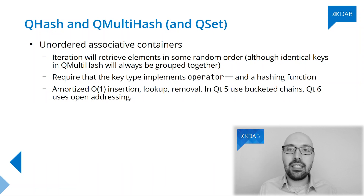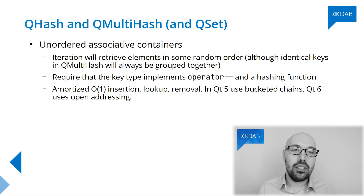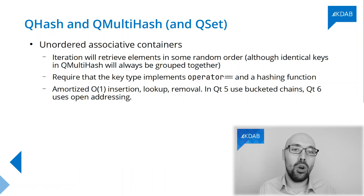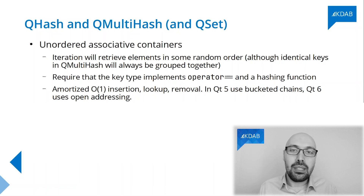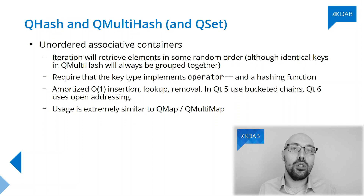Under the hood, this is done in a couple of different ways. In Qt 5 this is done using chains of buckets; in Qt 6 this is done using open addressing — but that's kind of an implementation detail, don't rely on that. Apart from this, the usage of these classes is extremely similar to QMap and QMultiMap.